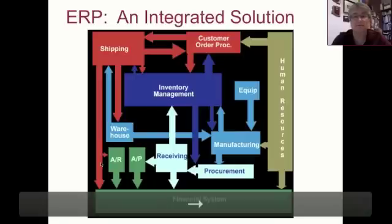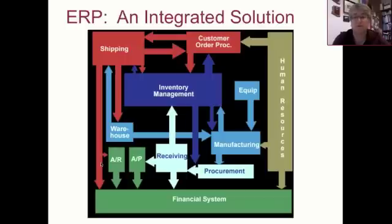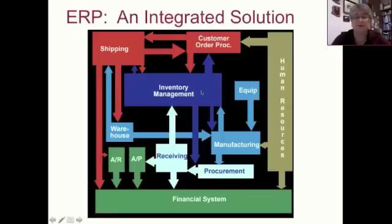In an ERP solution, it's all integrated. This picture shows a graphical representation of what might happen with one customer order. The colors on screen are there because ERP systems are usually sold in modules that are pre-integrated to make one unified solution. If an organization were to buy the whole system, starting with a customer trying to place an order — imagine we're with a bicycle company — the customer places an order for 100 bikes. During order processing, whether taken online or by phone, the order processing system checks with the inventory management module to determine whether there's sufficient inventory available for that customer order.